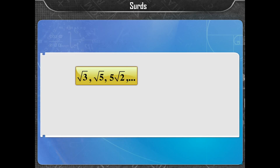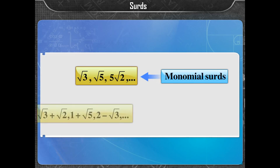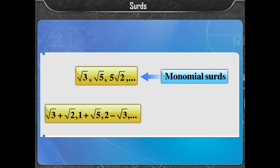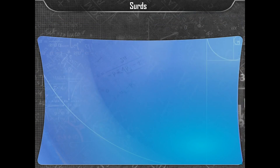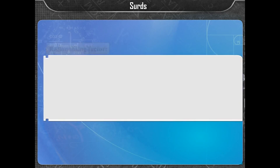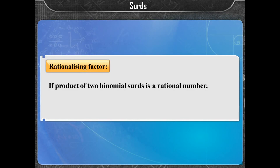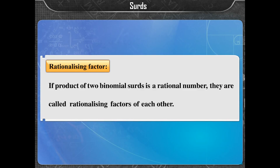Square root of 3, square root of 5, and 5 times square root of 2 are examples of monomial SIRDS. Square root of 3 plus square root of 2, 1 plus square root of 5, and 2 minus square root of 3 are examples of binomial SIRDS. If the product of two binomial SIRDS is a rational number, they are called rationalizing factors of each other.